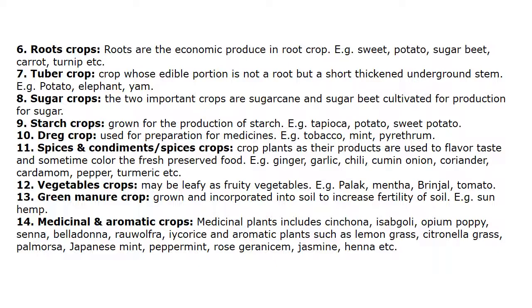Vegetable crops may be leafy or fruity, such as Spinach (Palak), Mentha, Brinjal, Tomato, and China Cabbage. Green manure crops are grown and incorporated into soil to increase fertility, like Sunn Hemp and Dhaincha.